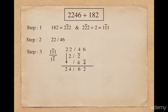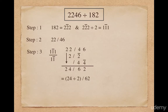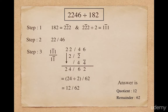In the first step I divided 2 2-bar 2 by 2, so I will have to divide the final quotient by 2. So 24 divided by 2 gives me 12, and the final remainder will be 62. So the final answer: quotient is 12 and remainder is 62.